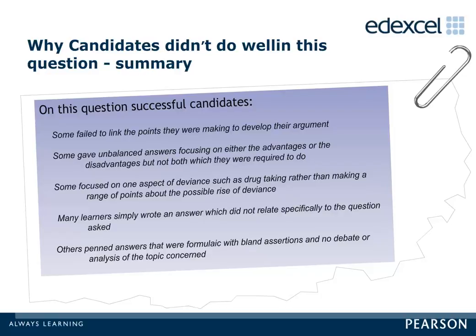Some candidates failed to link the points they were making to develop their argument. Some gave unbalanced answers, focusing on either advantages or disadvantages but not both. Some focused on one aspect of deviance such as drug taking rather than making a range of points. Many learners simply wrote an answer which did not relate specifically to the question asked. Others penned answers that were formulaic with bland assertions and no debate or analysis of the topic concerned.